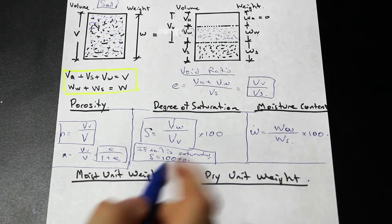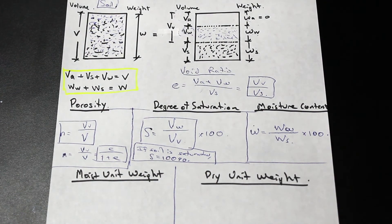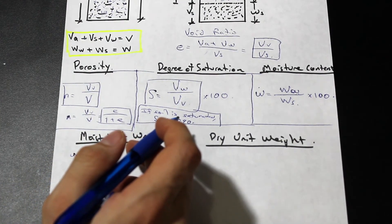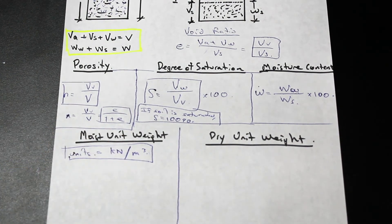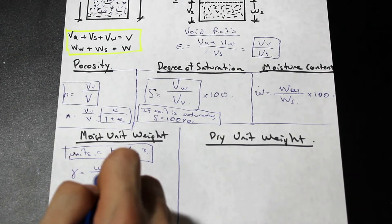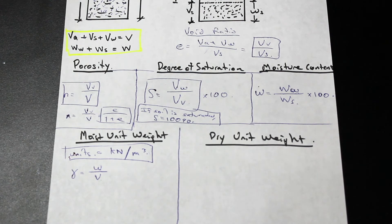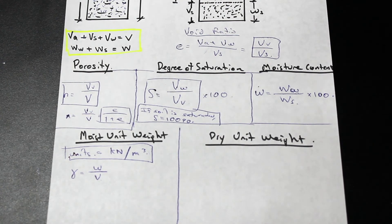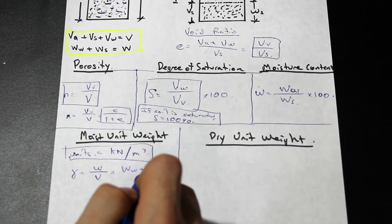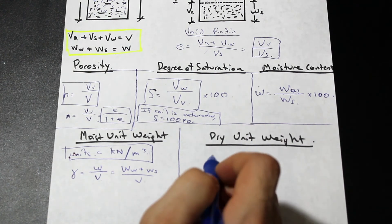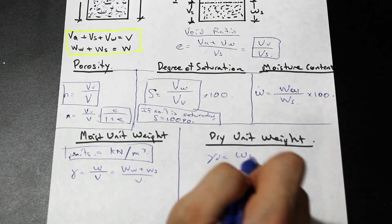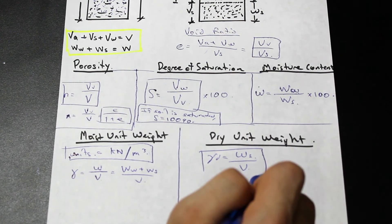Let's take a look at moist unit weight. Remember the units for unit weight: kilonewtons per meter cubed, though it could also be newtons per meter cubed. The moist unit weight is calculated as the total weight of the specimen — solids plus water — divided by the total volume; air is excluded because it's considered negligible. The dry unit weight is different: it's the weight of the solids only divided by the total volume. That's the key difference between dry unit weight and moist unit weight.